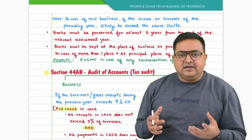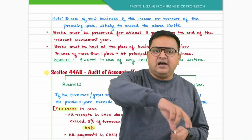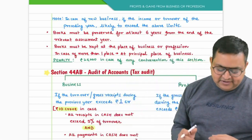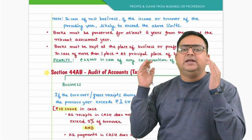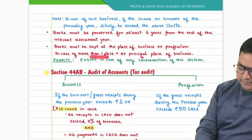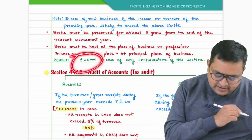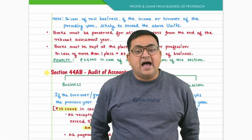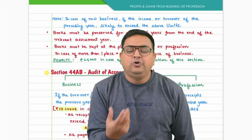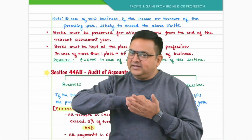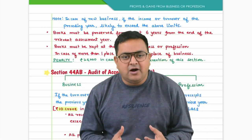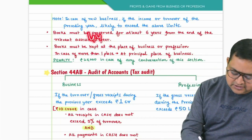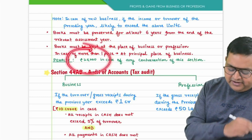If you have multiple places of business, books of accounts must be maintained at the principal place of business — your head office or corporate office. If an assessee satisfies the criteria but fails to maintain books of accounts, a penalty of ₹25,000 is levied under Section 44AA.